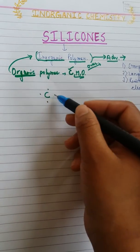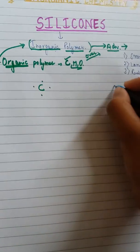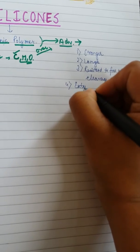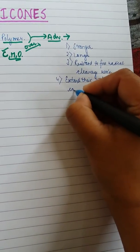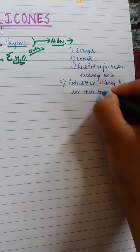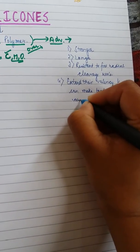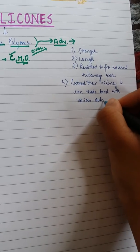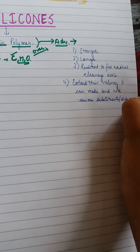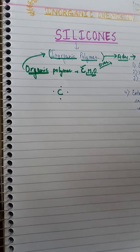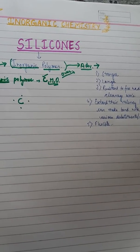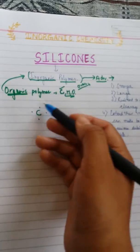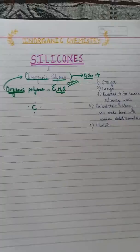While carbon has a valency of four, inorganic polymers can extend their valency and make bonds with greater than four substituents — substituents being the side groups. Additionally, inorganic polymers are flexible and have the ability to react with various chemical reagents, including a variety of reagents beyond those available to organic polymers.